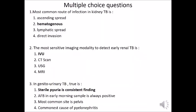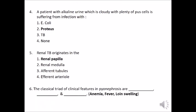To summarize with multiple choice questions: the most common route of infection in renal TB is hematogenous. The most sensitive imaging modality to detect early renal TB is IVU. In genitourinary TB, sterile acid pyuria is a consistent finding. A patient with alkaline cloudy urine with plenty of pus cells is suffering from infection with Proteus. Renal TB originates in the renal papilla. The classical triad of clinical features in pyonephrosis are anemia, fever, and loin swelling.